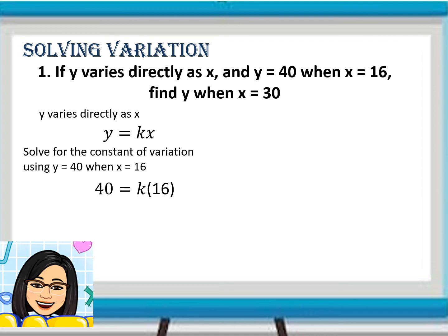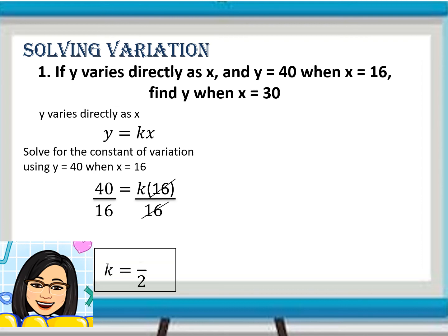By substitution, 40 is equal to K times 16. Dividing both sides by 16: 40 divided by 16, and K times 16 over 16. We can cancel 16 over 16, which equals 1. So, the value of K is equal to 5 halves. We now have the variation equation: Y is equal to 5/2 times X.